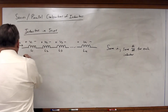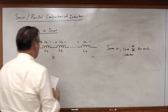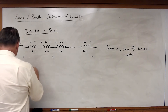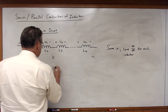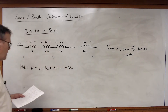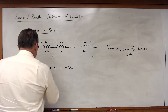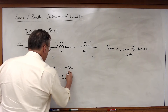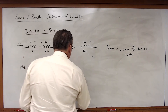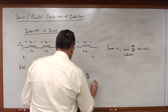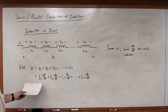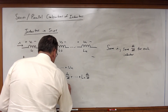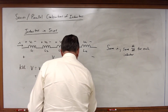Just as we did before, we're going to use KVL. Let's consider the voltage across that entire array. By KVL, V is just equal to V1 plus V2 plus V3, all the way to V sub N, which will just be equal to L1 times di/dt, plus L2 di/dt, plus L3 di/dt, all the way to L sub N times di/dt. We can factor out the common term di/dt.